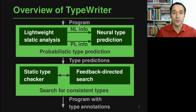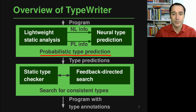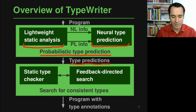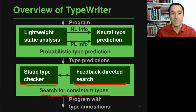This is exactly what our approach, TypeWriter, does. TypeWriter takes a program as input and returns it with type annotations — essentially taking your code and writing types into it just like a typewriter. It works in two steps. First, a probabilistic neural type prediction model extracts information via lightweight static analysis and returns a list of type predictions for every location missing an annotation. Second, a static type checker and a feedback-directed search find consistent types among the predictions, ensuring the program is type-correct at the end.